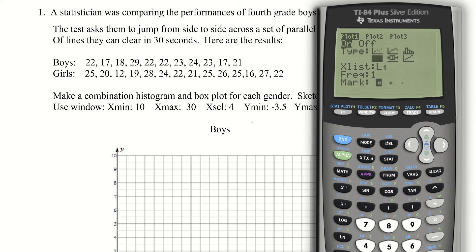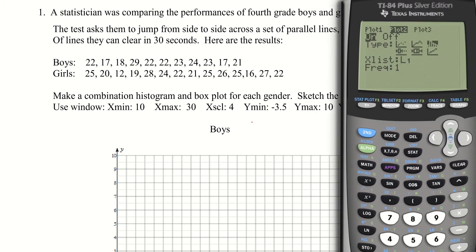Now that plot one is set up, let's go up and modify plot number two. For this one, I need to turn it on as well, then go down and turn it into a histogram. Normally at this point I would hit zoom and then 9 for zoom-the-data, but I want to use the particular window I've been assigned.